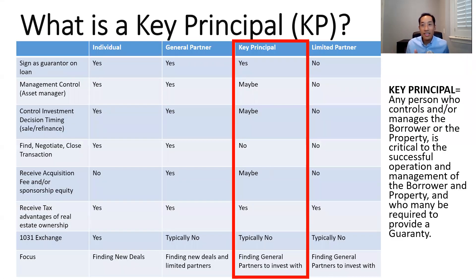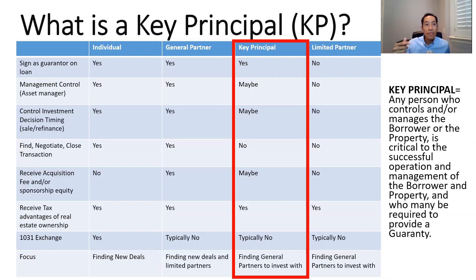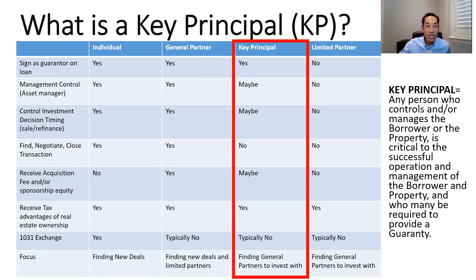A key principal really sits in between a general partner and a limited partner. A general partner is going to sign on the loan, find the deal, negotiate the deal, receive an acquisition fee and sponsorship equity, and control the deal the whole way through. A key principal sits one step below that — they're going to sign on the loan, may have asset management control, may control investment decision timing, and potentially could receive a fee. A limited partner is not signing on the loan, not negotiating or managing anything, but receives all the tax benefits of owning real estate.